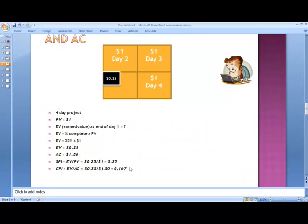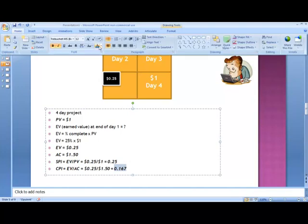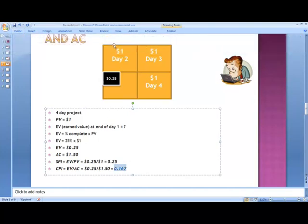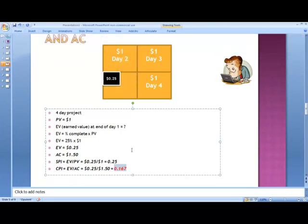So the question is, what does that mean? What does 0.167 mean as far as actual cost? Well, what that means is for each dollar, and that should actually be in red because that's a horrendous CPI.